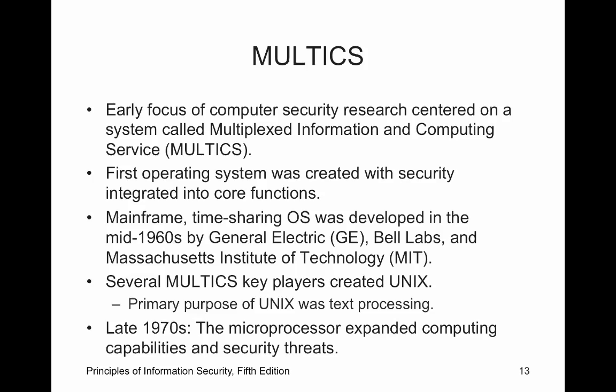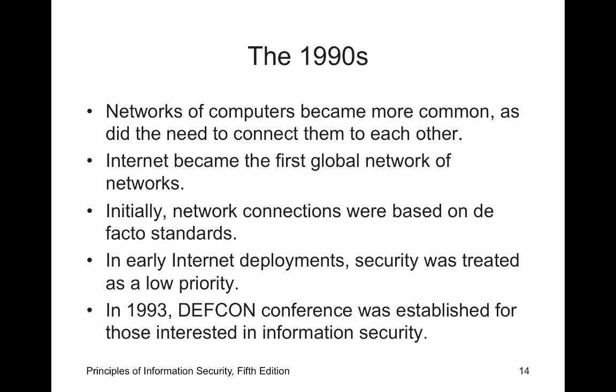Multics — Multiplex Information and Computing Services — was a way to speed up our computer environment. It was popular with Unix; it gave us our multi-processor system and allowed multiple people to log in. So we started getting to the point of using computers more in depth.